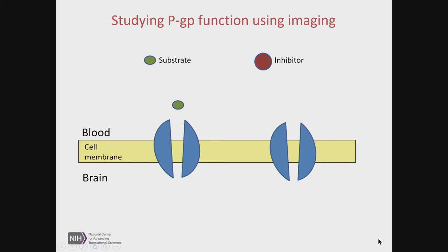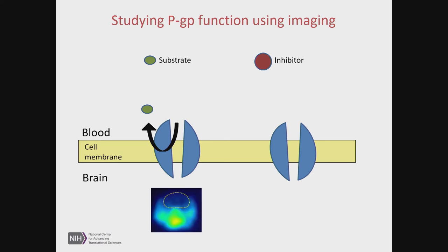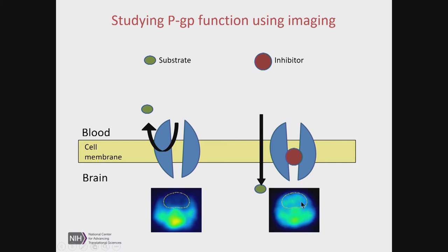We decided to try and image drug transporter function at the blood-brain barrier. We had fantastic collaborative investigators at the National Institutes of Mental Health — Bob Innis and Victor Pike — who were part of a PET imaging team. Together we thought about how to study PGP function at the blood-brain barrier. The conceptual idea was simple: a radiolabeled substrate injected into an animal would be intercepted by transporters and wouldn't be able to enter the brain — so you wouldn't see much brain signal. However, if you co-inject a pharmacologic blocker of ABC transporters like PGP, you stop the drug transporter from working, and when you inject that radiotracer, it will diffuse into the brain and you should see brain signal.